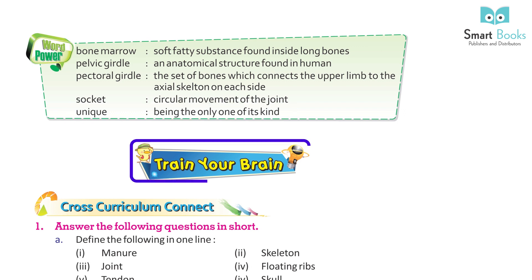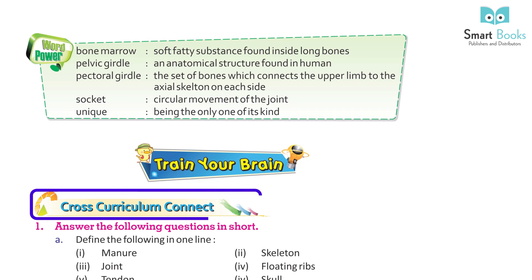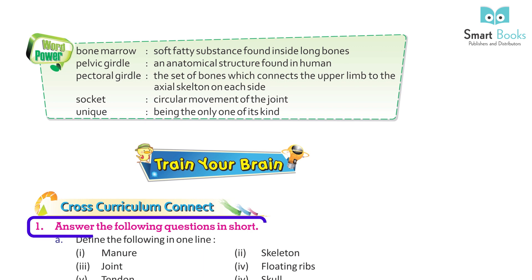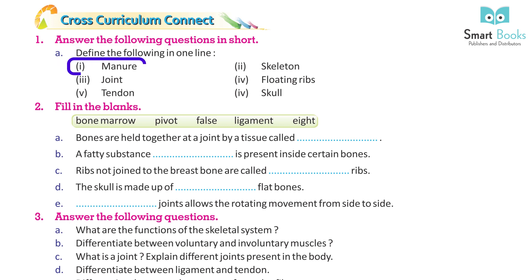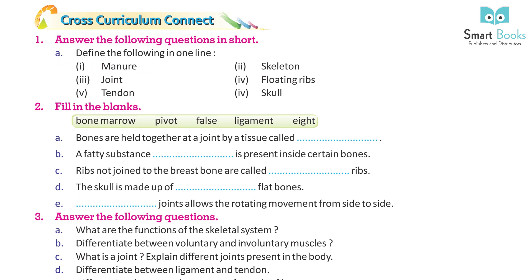Train your brain. Answer the following questions in short. A. Define the following in one line: 1. Manure. 2. Skeleton. 3. Joint. 4. Floating ribs. 5. Tendon. 6. Skull.